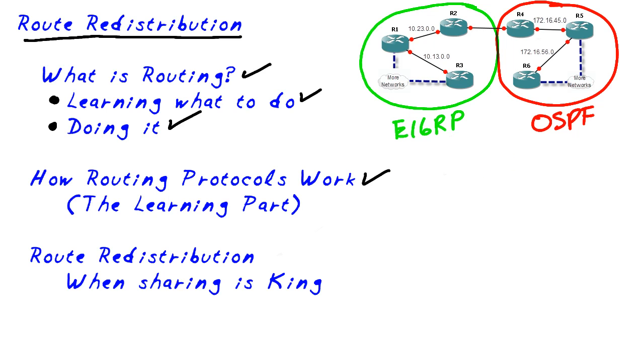And then one day, these two companies merge together, and they connect their networks with this common network segment right here. But the challenge is that all of the devices on this side, the left-hand side, don't know how to reach all the networks on the right, and vice versa. What's the solution to this problem?